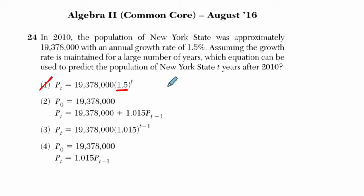Remember that in general, you can look at a population growth. You have your initial population, P sub 0, times 1 plus your rate to the T power. This is the population after T years.